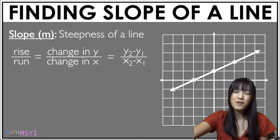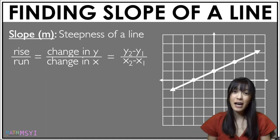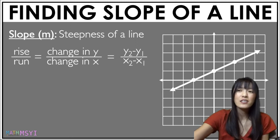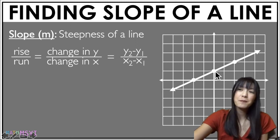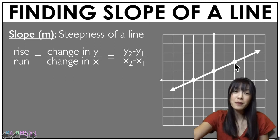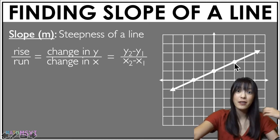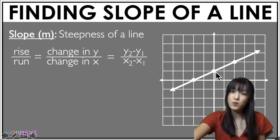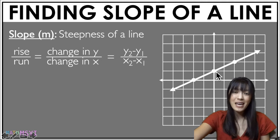We're going to start with this line here. Anytime I have a line I'm going to find two points on this line. I can choose any two points, and I'm going to choose this point here and this point here. I'll start from the point on the left side, and since slope is rise over run I'm going to calculate my rise and calculate my run.